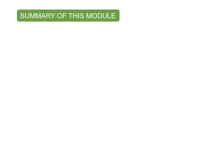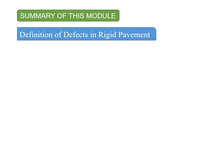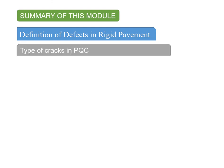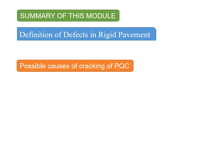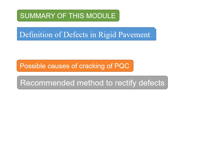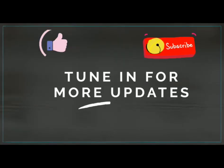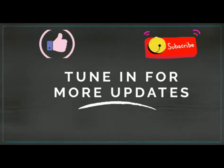To summarize this module: we talked about the definition of defects in rigid pavement, the types of cracks in PQC, the possible causes of cracking of PQC, and the recommended methods to rectify the defects in PQC. Thank you very much for watching.